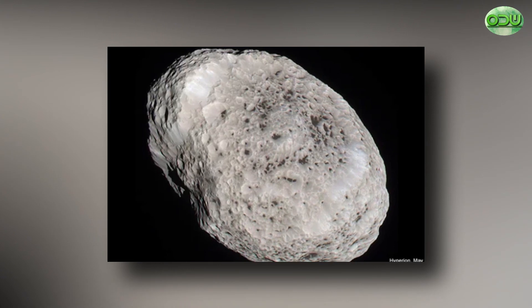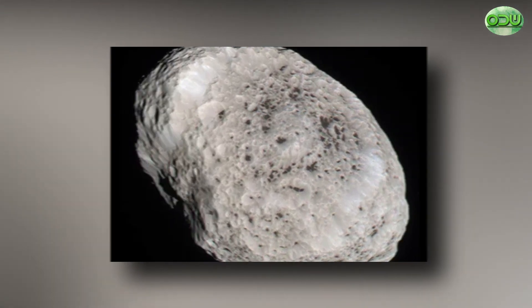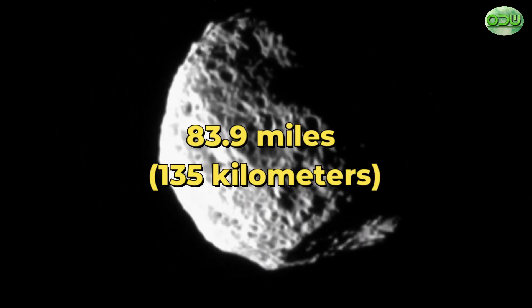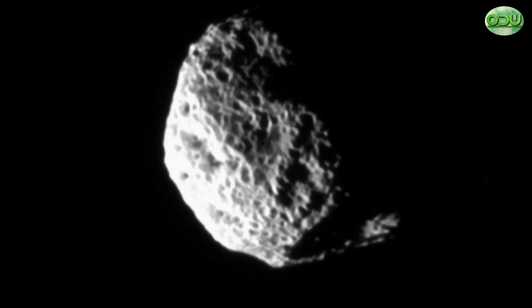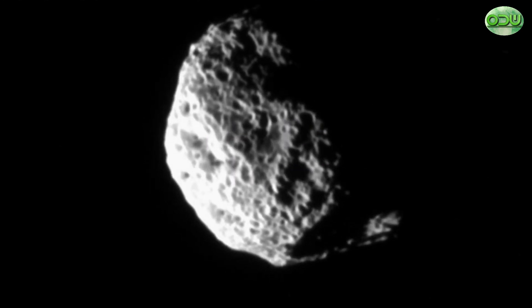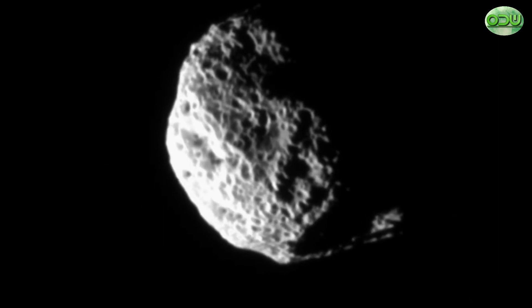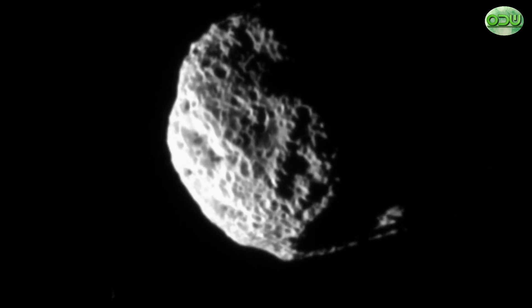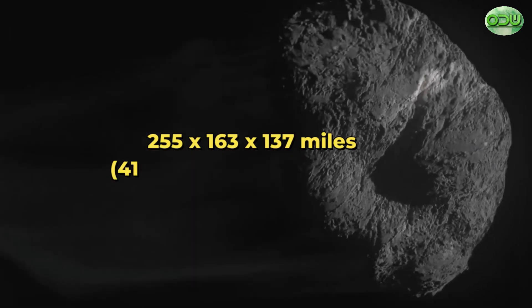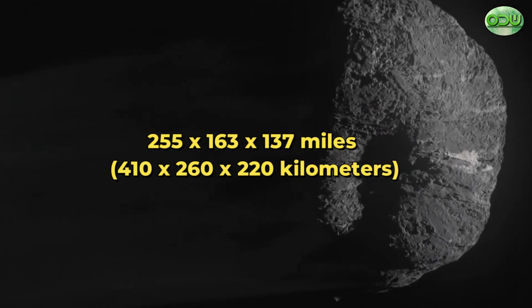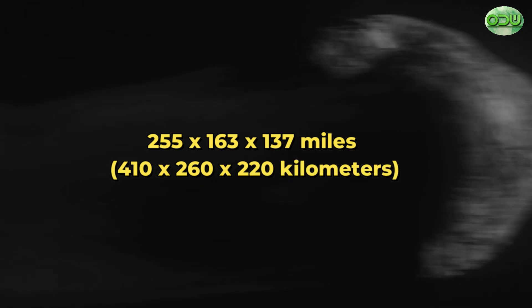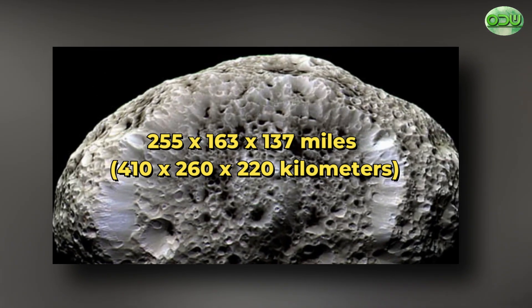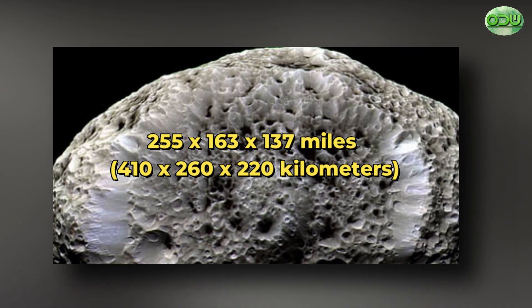Hyperion is the largest of Saturn's irregular, non-spherical moons. Hyperion's mean radius is 83.9 miles, or 135 kilometers. But since Hyperion is rather potato-shaped, its shape can be described in terms of its diameter along its three axes: 255 by 163 by 137 miles, or 410 by 260 by 220 kilometers, respectively.